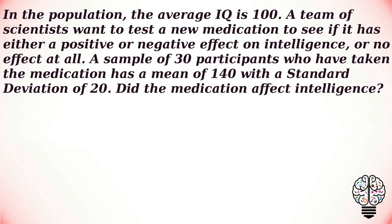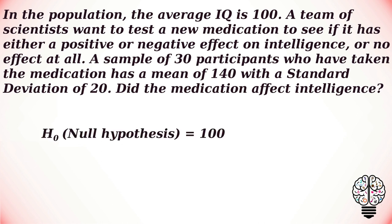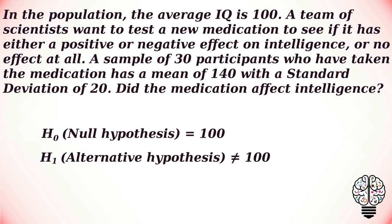A sample of 30 participants who have taken the medication has a mean of 140 with a standard deviation of 20. We have to find if the medication has affected intelligence. First, we define our null hypothesis and alternative hypothesis. A null hypothesis is a statement about a population parameter — a number that describes something about an entire group or population. In our case, the null hypothesis H₀ is that the mean equals 100.